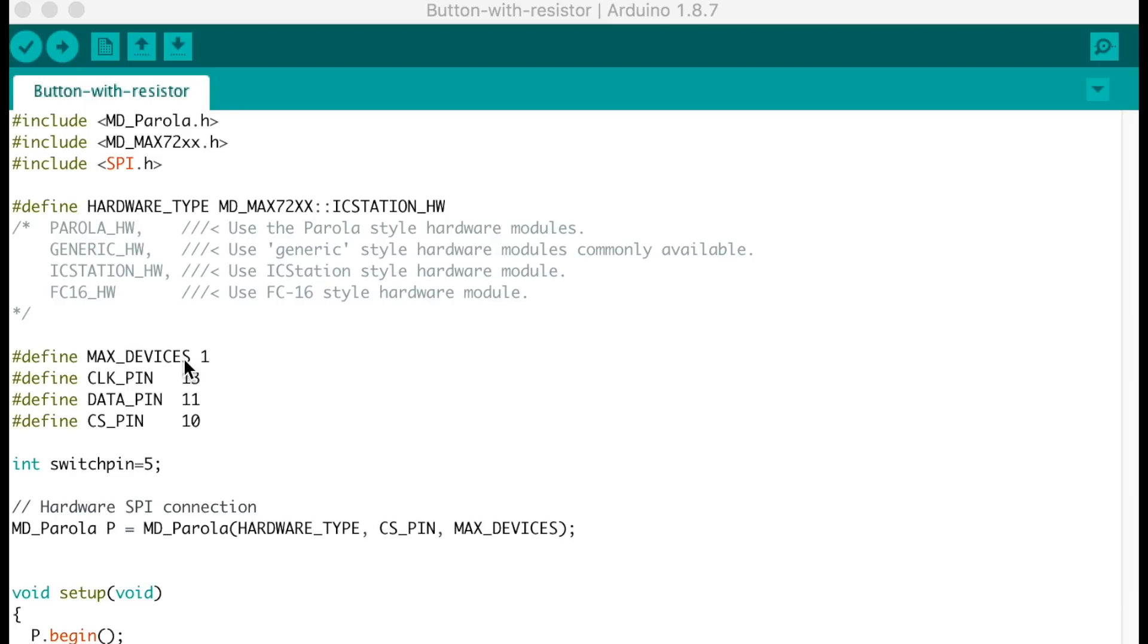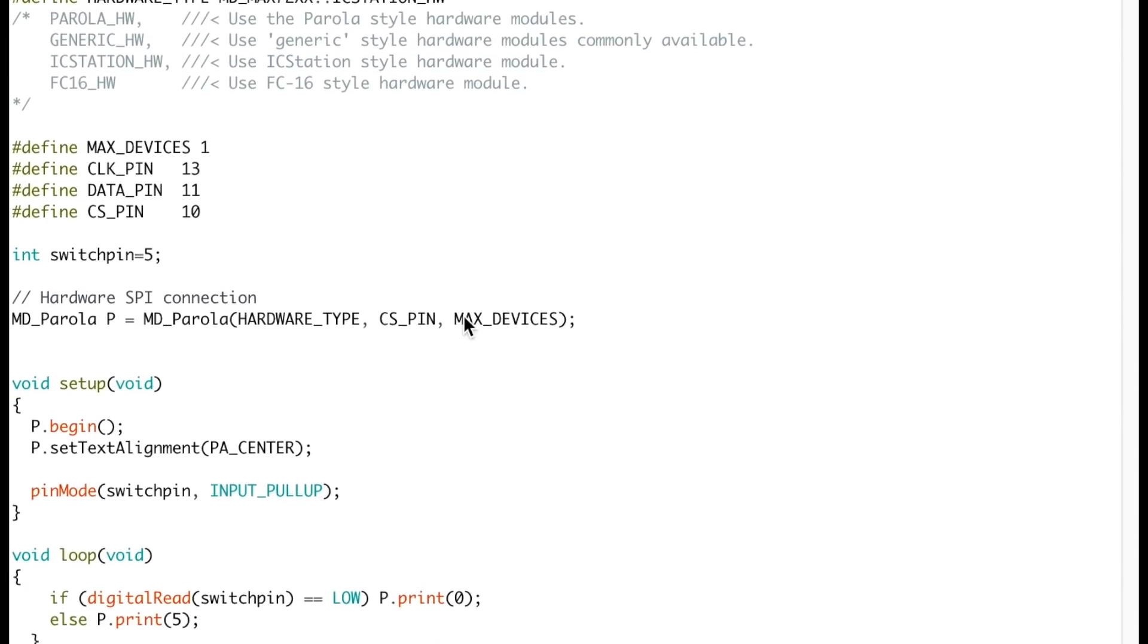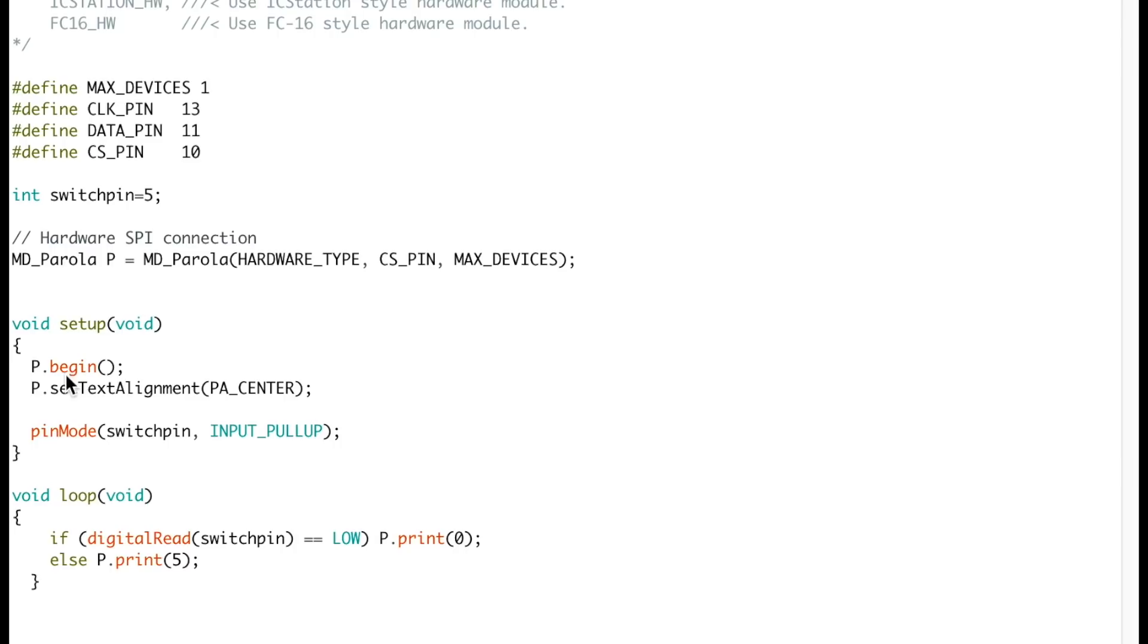Then the maximum device, I only have one matrix. These are the pins that it uses and the tag switch is connected to the digital pin on the Arduino 5. Then I start the communication and then we get to the setup so we begin the matrix. We set the text alignment to the center of the matrix and here I'm gonna change this portion depending on the scenario that we're using.